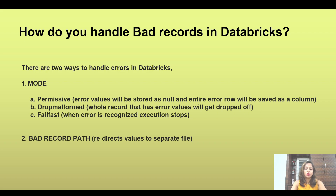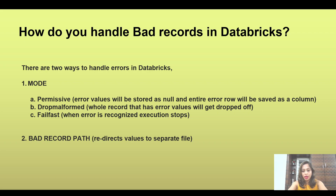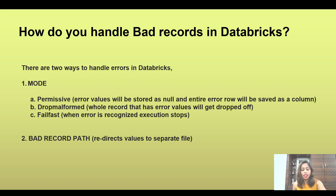The next question is: how do you handle bad records in Databricks? This is a very common question. Let's say you have a mismatch or nulls — how do you handle that? There are three modes: permissive, drop malformed, and fail fast. Additionally, there is the bad record path option, where you redirect bad records to a separate file that holds only those bad records.